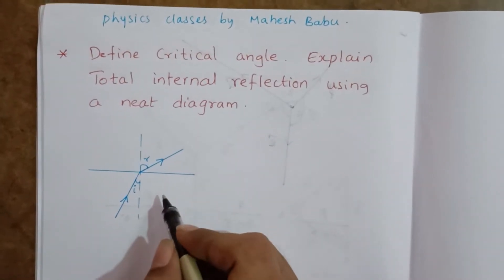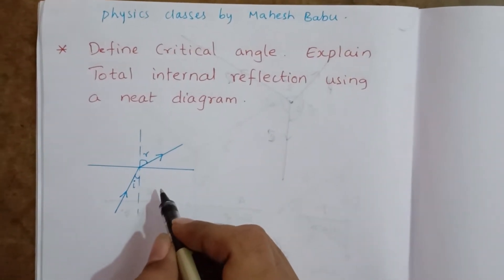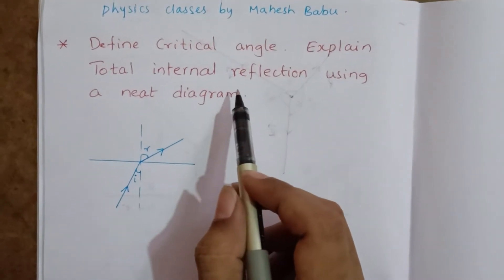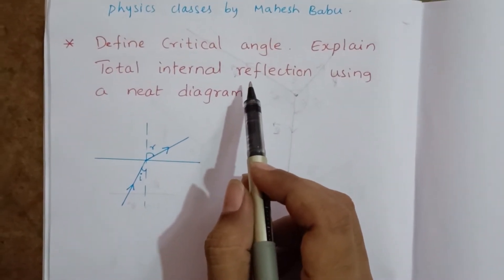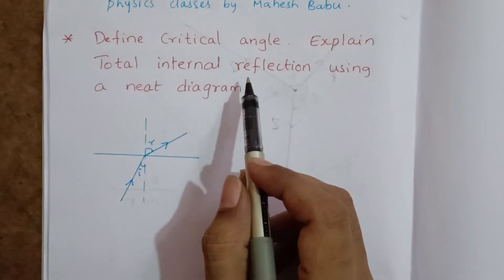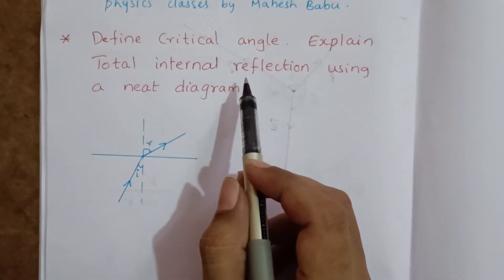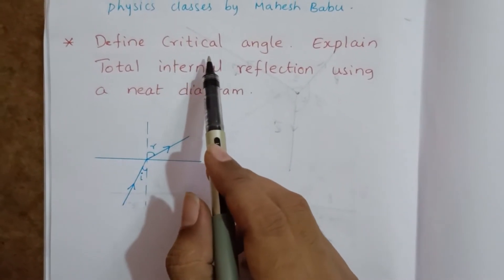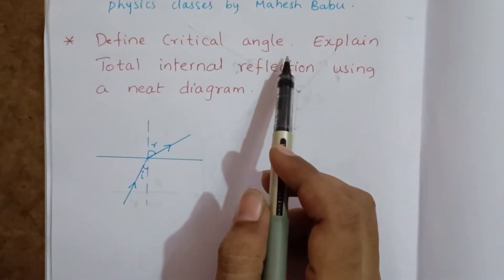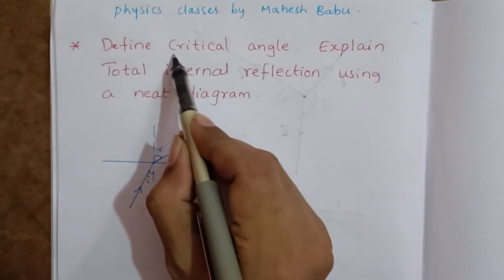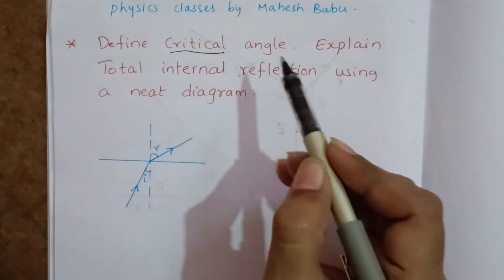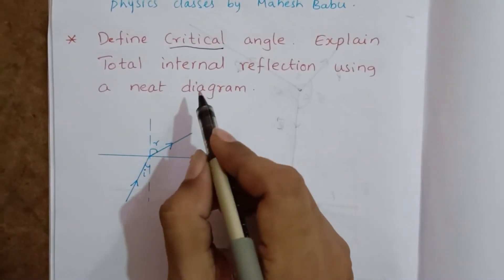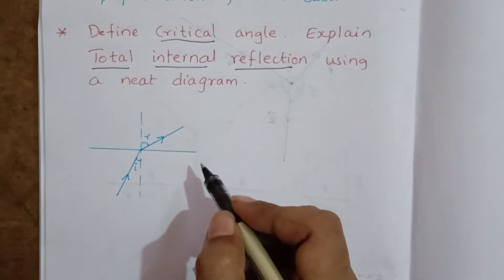Hi students, welcome to physics classes. Now we will discuss important short answer questions from the lesson ray optics, intermediate second year physics. The question is: define critical angle and explain total internal reflection using neat diagrams.